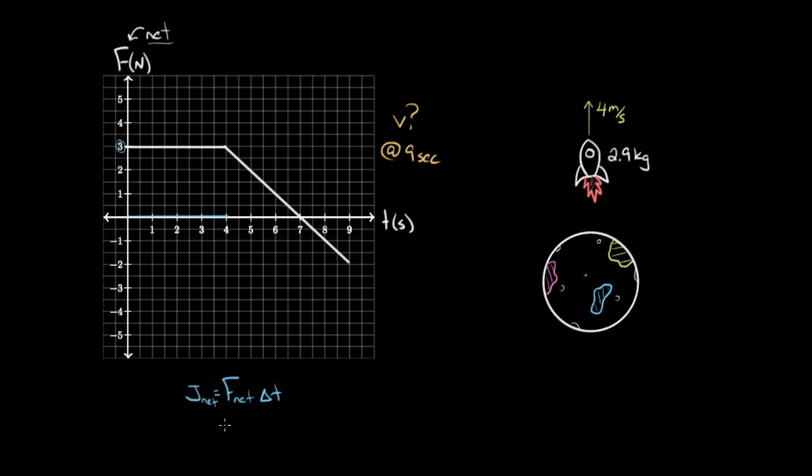So this gives us the net impulse. If we take this constant three newtons that acts, multiply by four seconds during which it acts, we get that there's an impulse of 12 newton seconds. Now you might be like, wait, who cares about newton seconds here? I want the velocity. I don't care about the force and the time. I want to know the velocity at nine seconds.